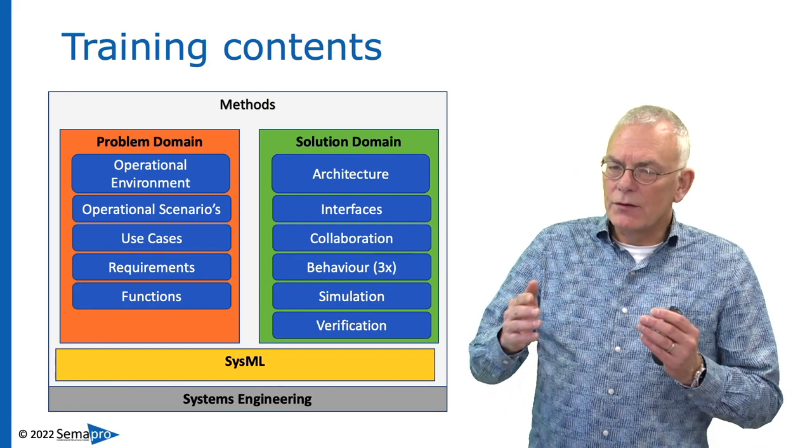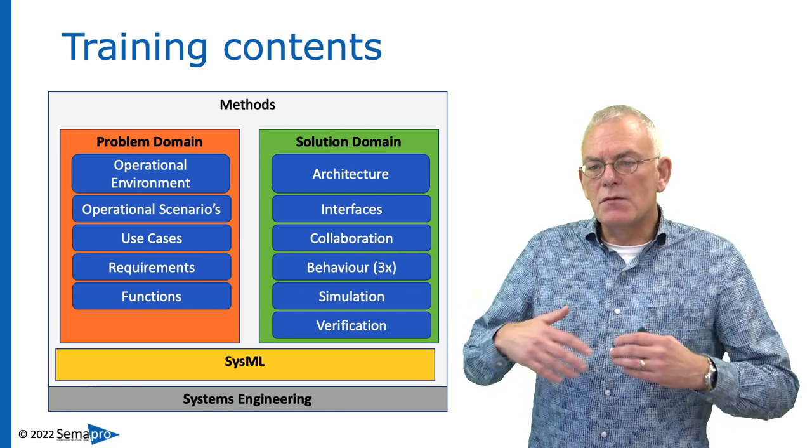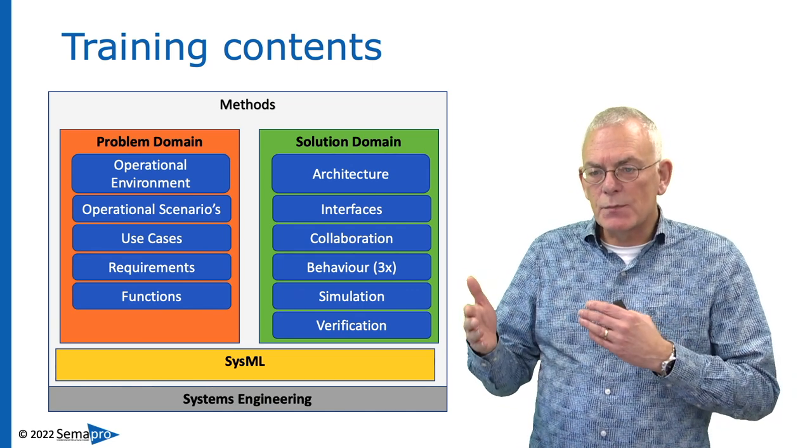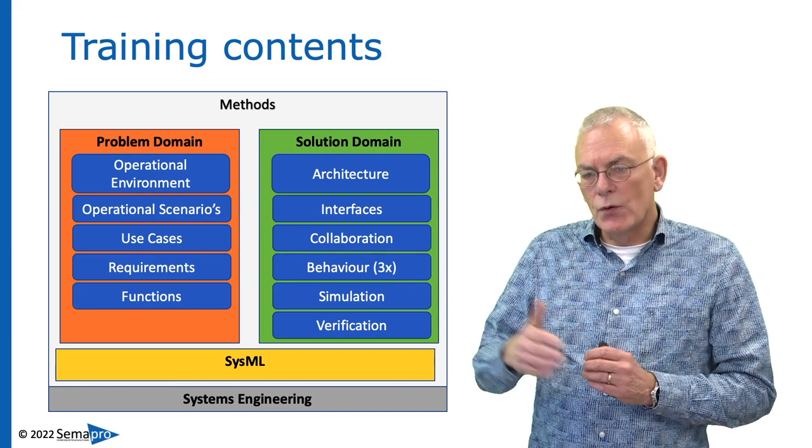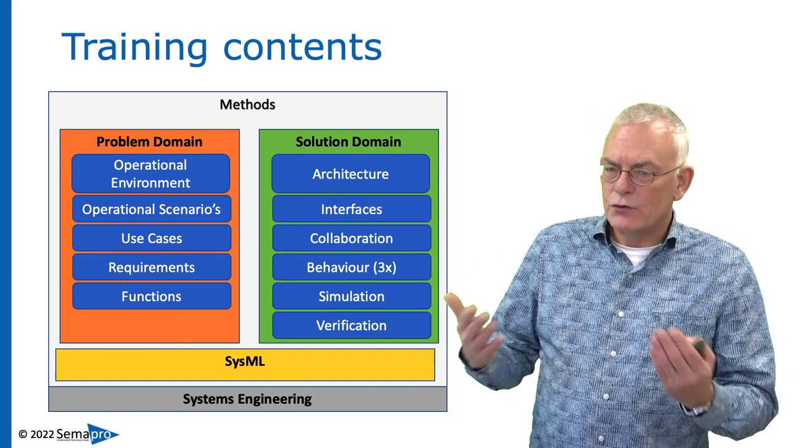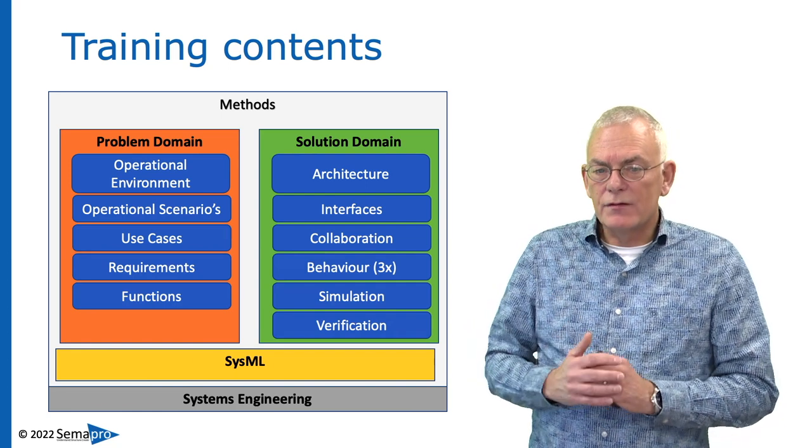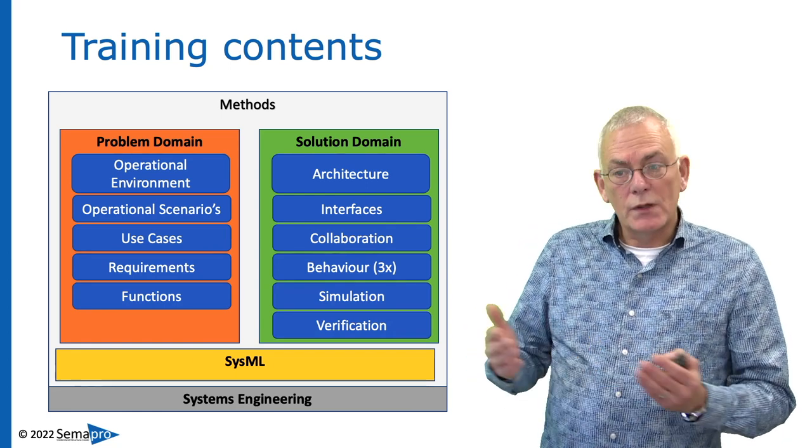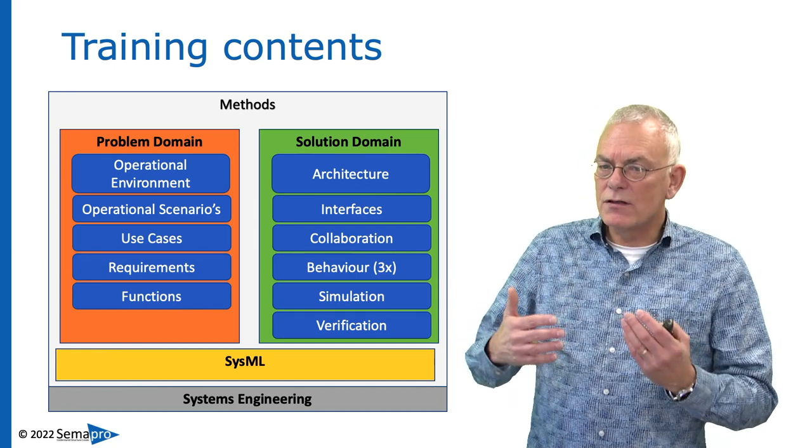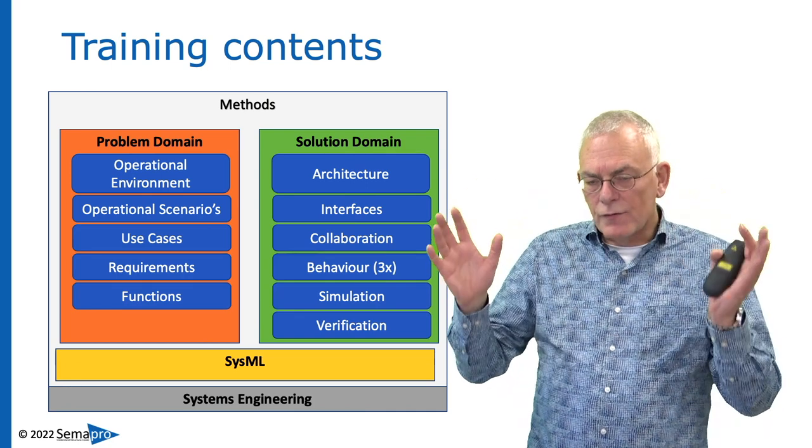We're going to talk about user requirements in the form of use cases. Now, the training is called architecting and designing with SysML. So, SysML is a means to describe certain aspects of your design. And use cases, although in SysML there's a very small chapter on how you should write them down, there's actually a complete method behind it. And we're going to dive into this method as well. We're going to talk about requirements, what is needed by the system. And we're going to talk about functions. So, functions that are required to be performed by the system as a part of a system of systems.